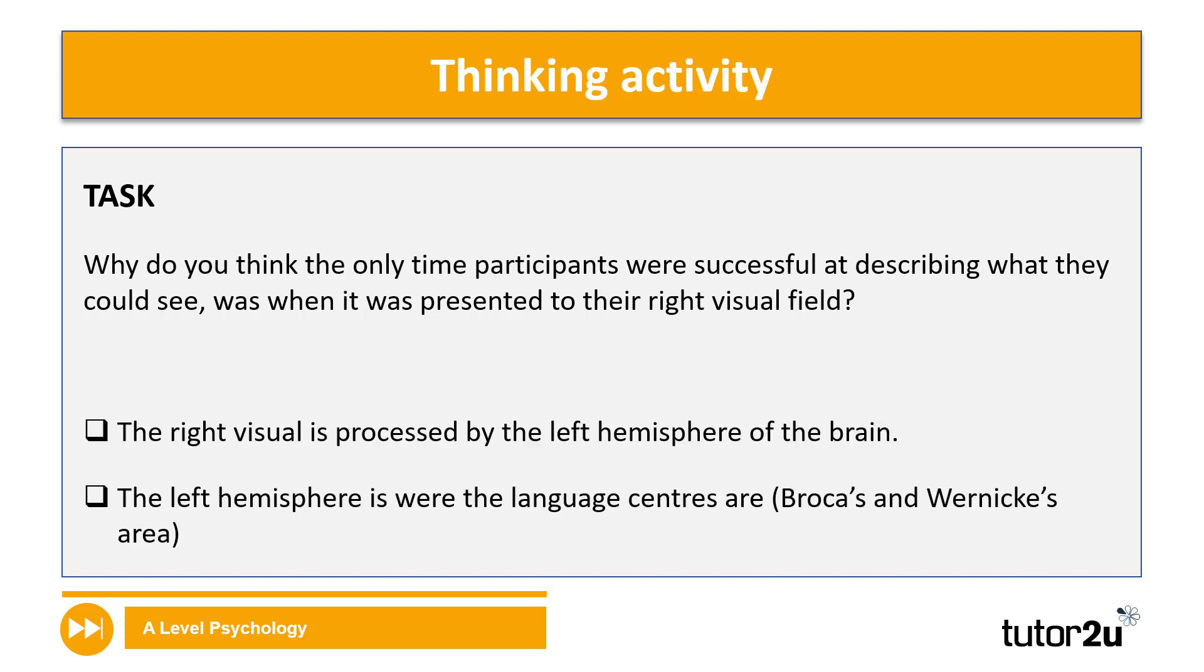Here's two crucial things that you would need to include in your answer. Firstly, the right visual field is processed by the left hemisphere of the brain, and the left hemisphere is where the language centres are. This tells us that the left hemisphere of the brain may be attributed to the language skills. If they're presented in the right visual field and we can complete the job of describing what we see, then this means that the left hemisphere of the brain has been in use, and therefore we can conclude that language is lateralized to the left.